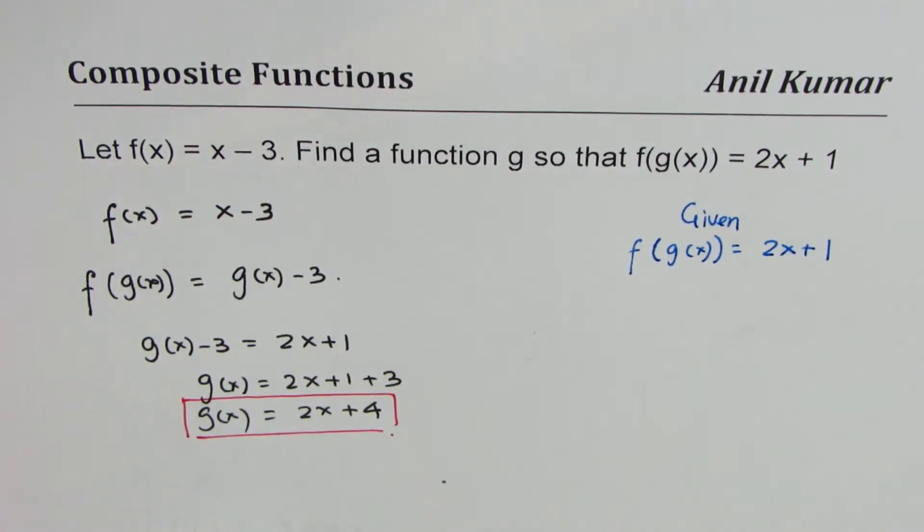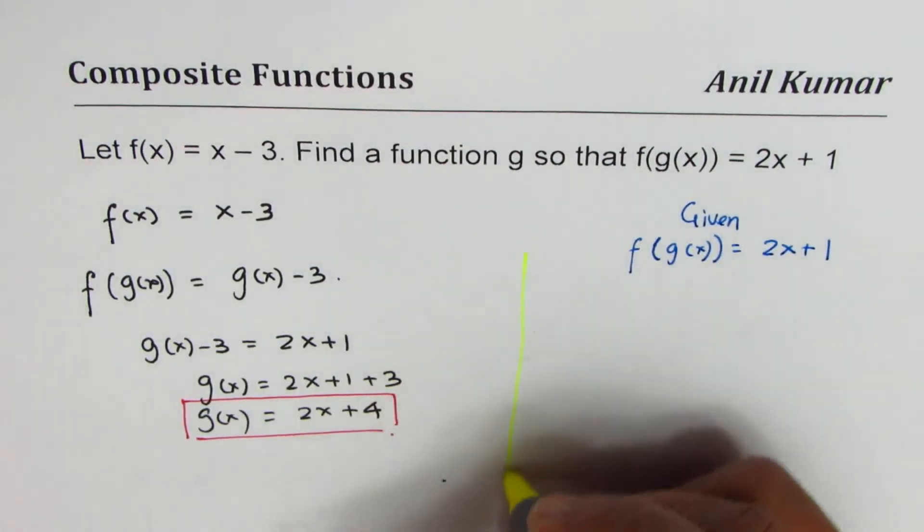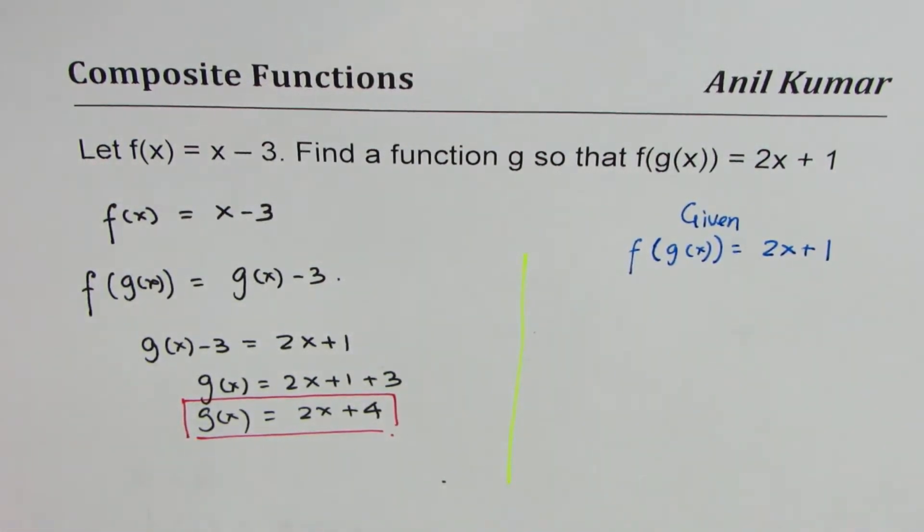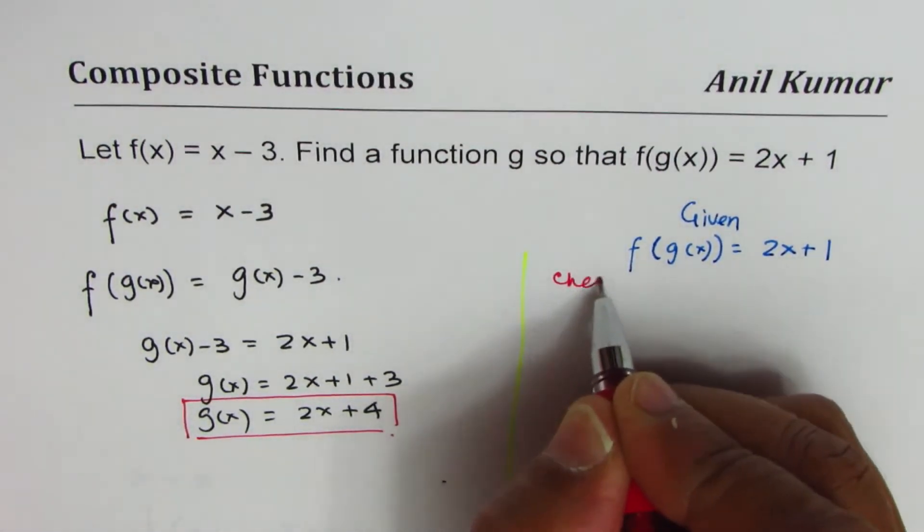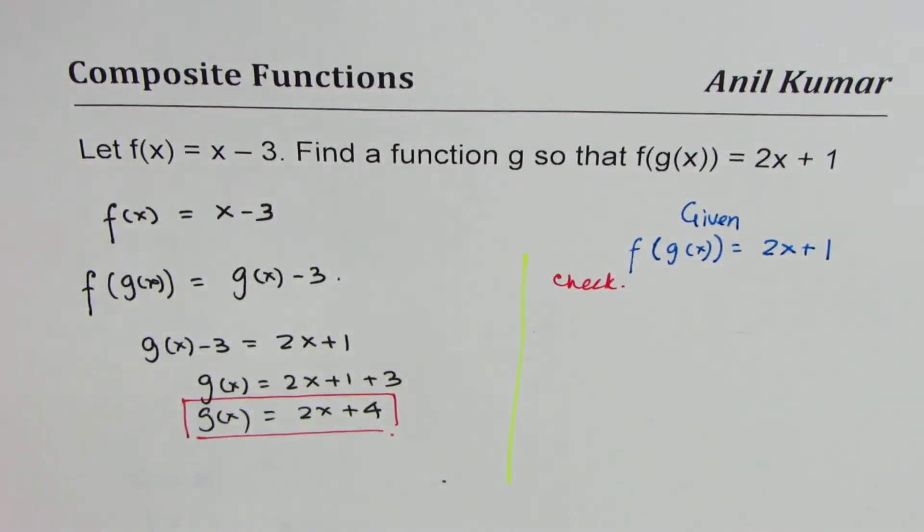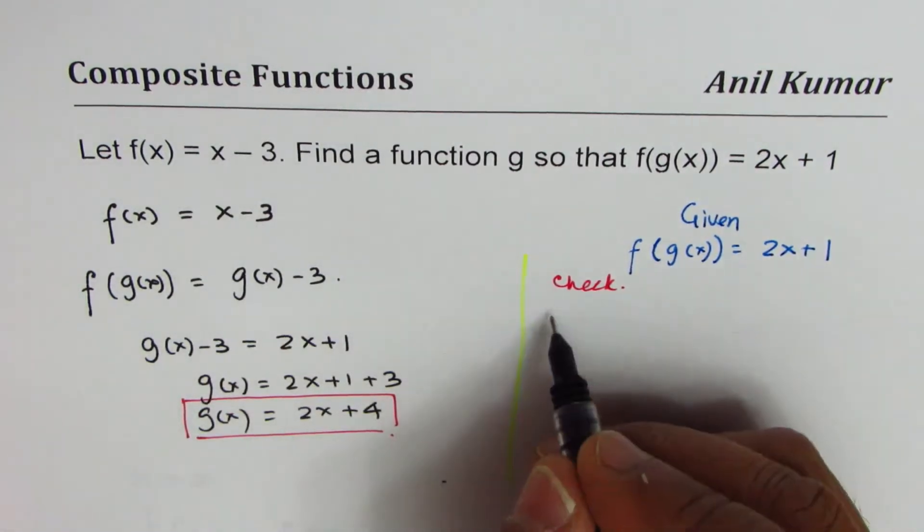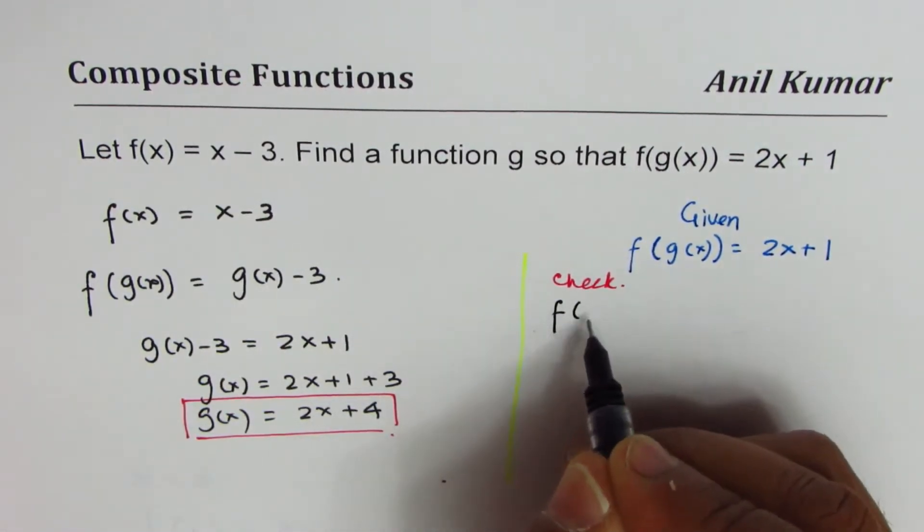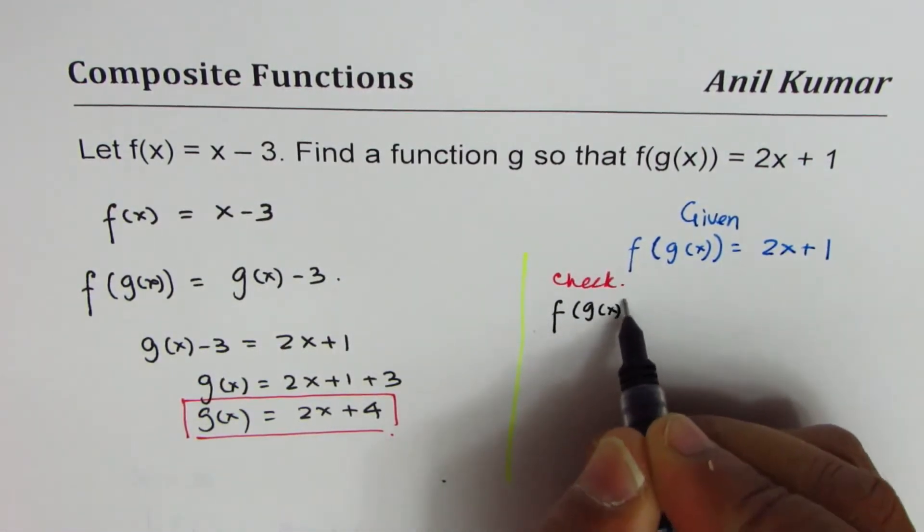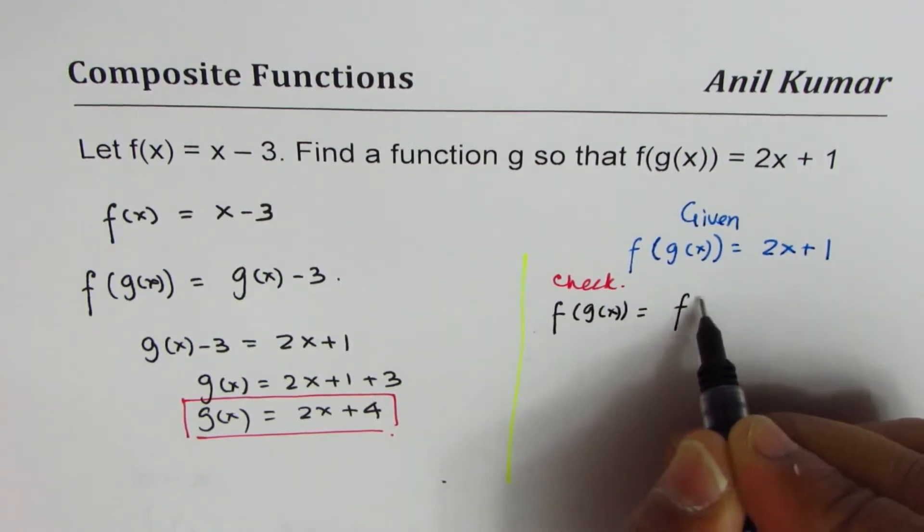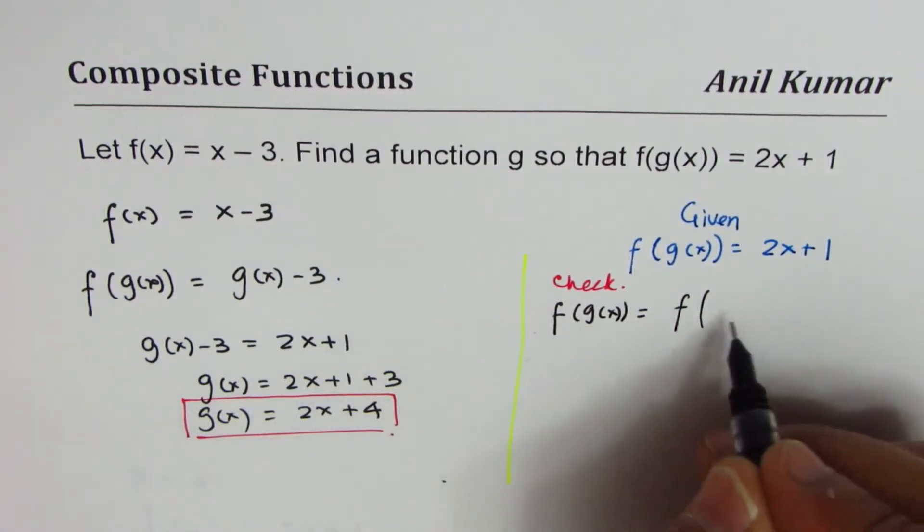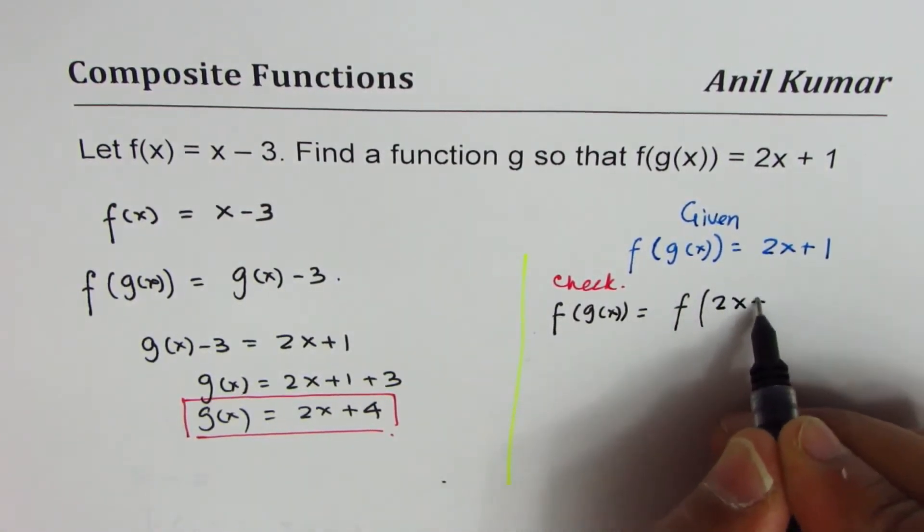Now I'd like you to verify this result, right? So let's check the result. f(x) is x - 3, g(x) is 2x + 4, right? So f(g(x)) should be f(2x + 4).